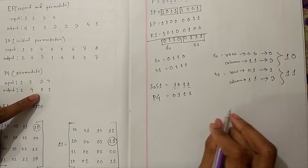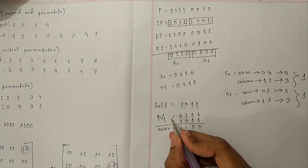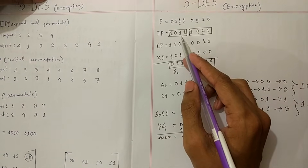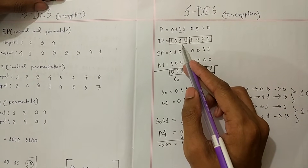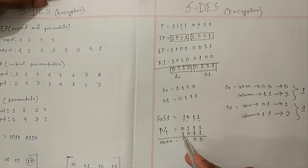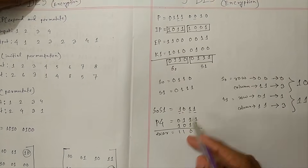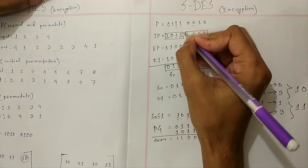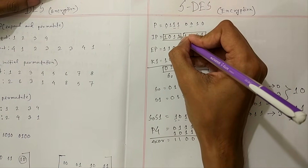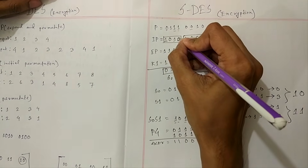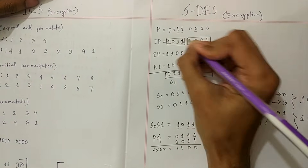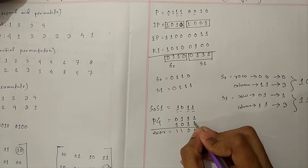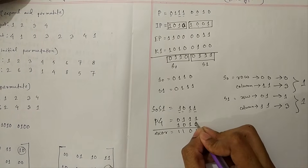The P4 value is combined with the first half of the IP output. There is a small correction here. The first IP half value is 1, 0, 1, 0. And the left portion here is also 1, 0, 1, 0.